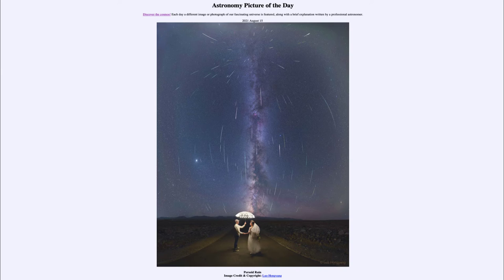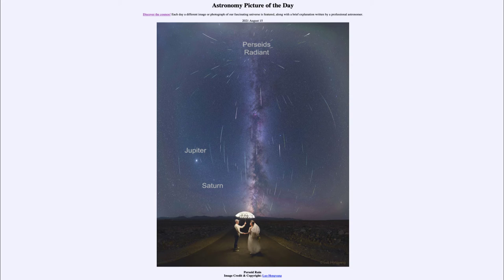If you trace all of the meteors back and connect them, you notice they appear to come from a region near the top of the image. This is called the radiant of the meteor shower — it is where the meteors appear to radiate from. That's because all the tiny pieces of dust and grains of sand striking Earth's atmosphere came from the same comet, meaning they're all traveling through space in the same orbit, parallel to each other. When we look at them from a distance, they appear to converge to one point in the sky.